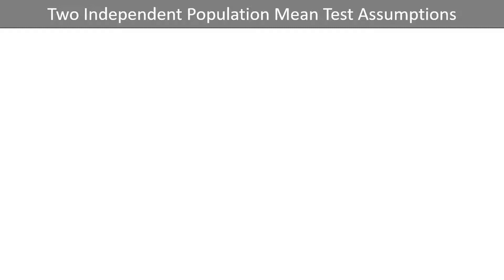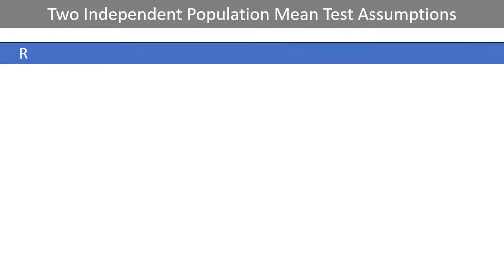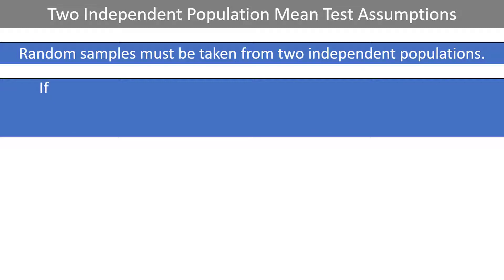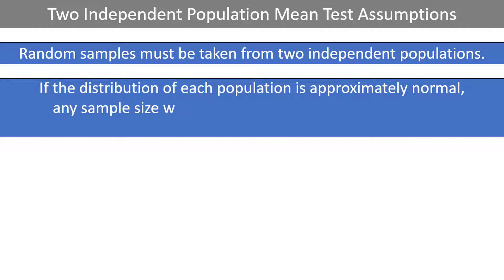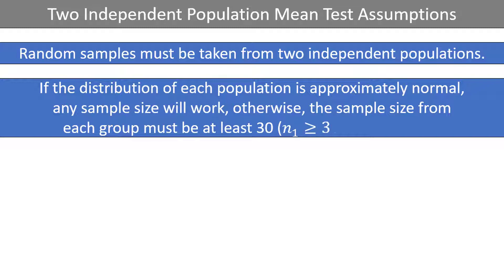Let's talk about the assumptions of the two independent population mean test. Firstly, random samples must be taken from the two independent populations. Secondly, if the distribution of each population is approximately normal, any sample size will work. Otherwise, the sample size from each group must be at least 30. Note that the sample size from group 1 does not need to be the same as the sample size from group 2.